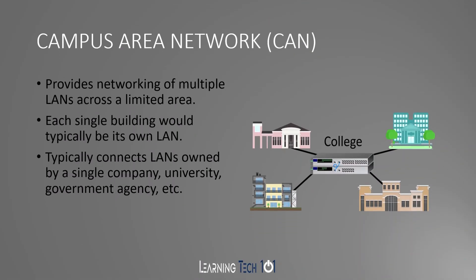Next, we have your campus area network. This provides networking of multiple local area networks across a limited area. Each building is typically going to be its own local area network. Most campus area networks consist of a single company, university, or government agency that owns multiple buildings within a small area. For example, at a college, the dorms could be one LAN, a hall another, or the library another — each their own local area network but all connected together to support the overall network for that single organization.